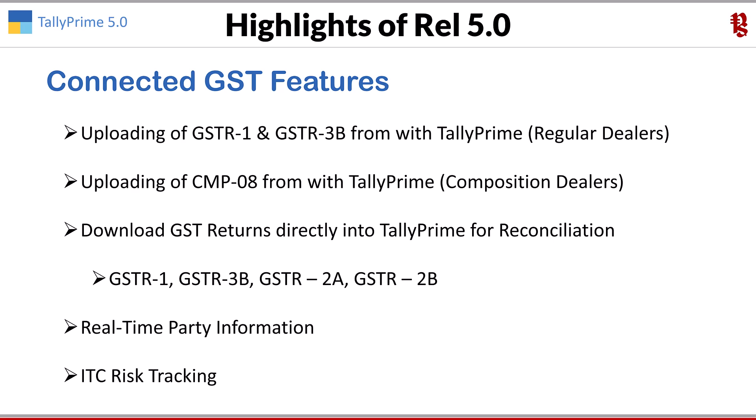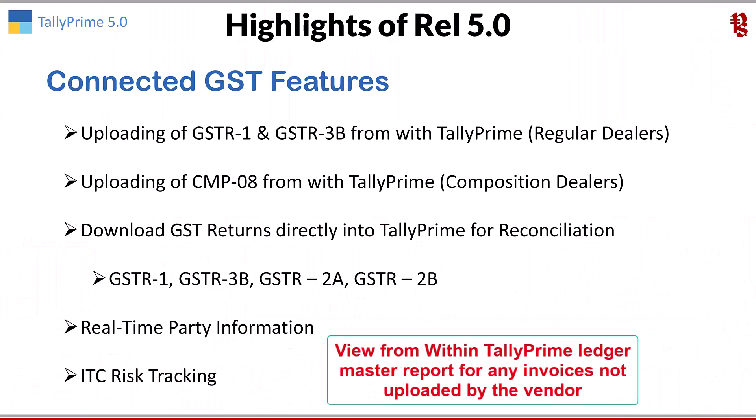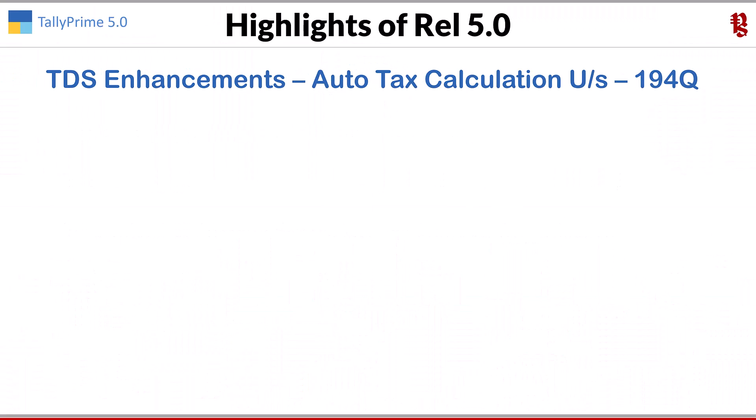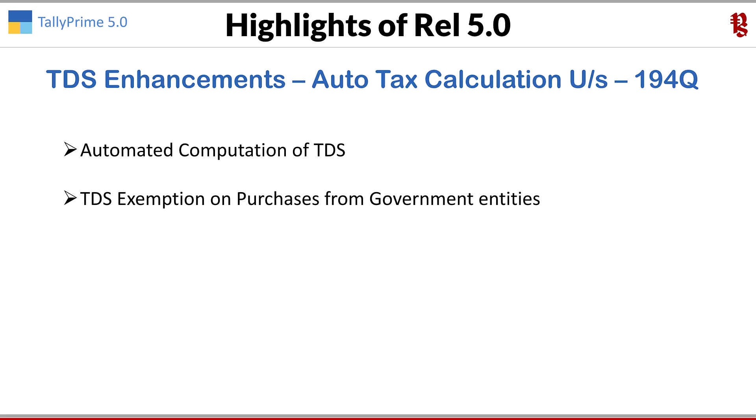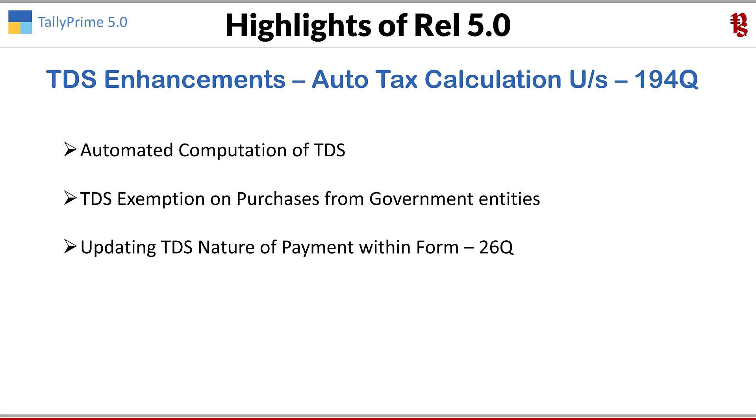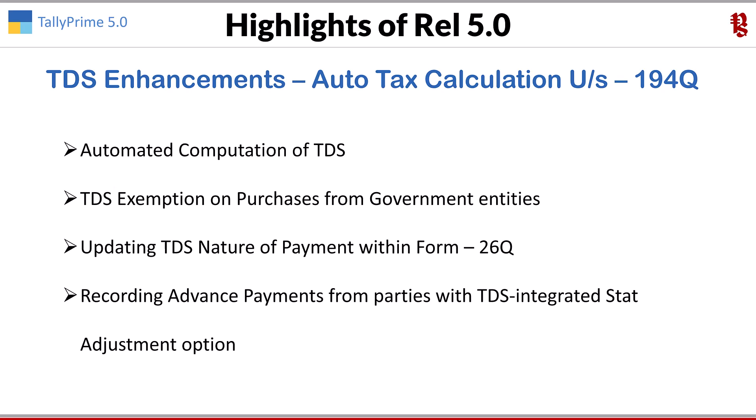Another important feature is ITC risk tracking. With Release 5.0, you can check whether your seller has uploaded vouchers on the GSTR portal with the appropriate tax amount, for all your suppliers, via the newly provided bills payable report for GSTR. For TDS enhancements, the exemption limit of 50 lakh will be considered and TDS will be calculated automatically when you capture the transaction. You can configure the party master for TDS exemption on purchases from government entities, and the exemption limit and exempted party purchases will be auto-updated in Form 26Q.